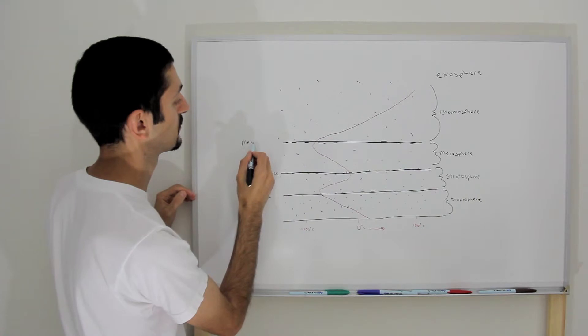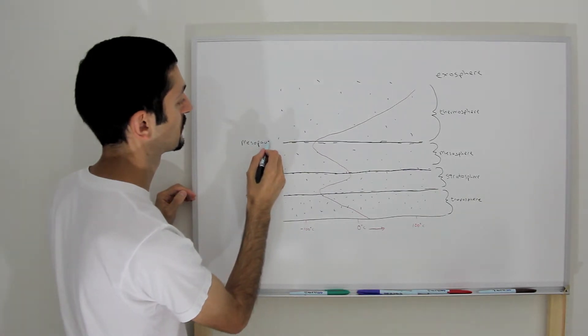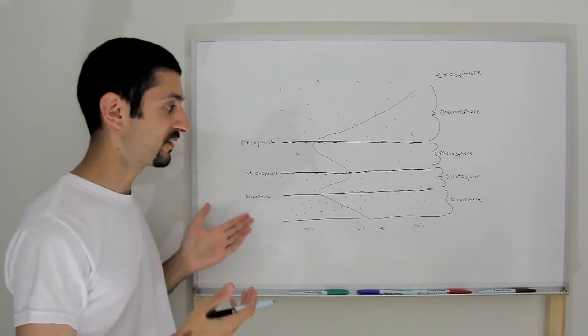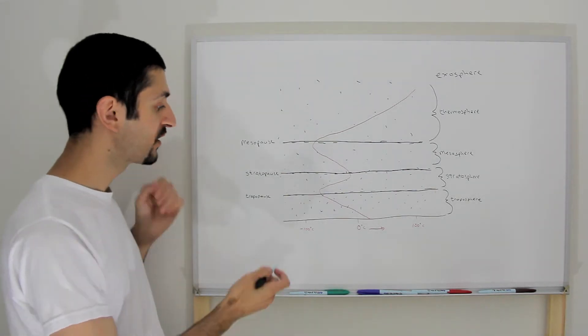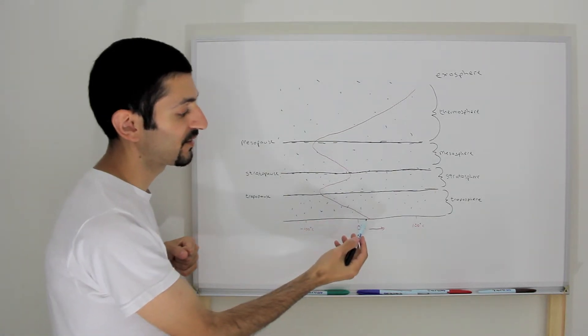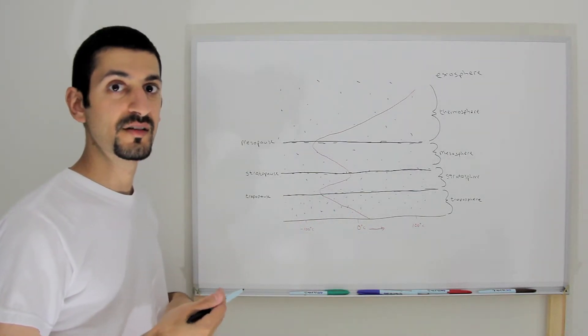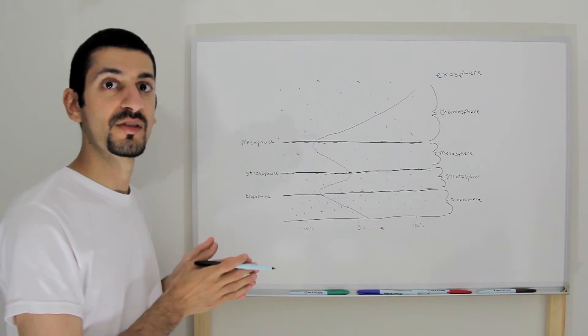So, what forms these different layers? This first layer, the air is getting less dense with height, and the temperature is getting colder because there's less friction between the molecules.